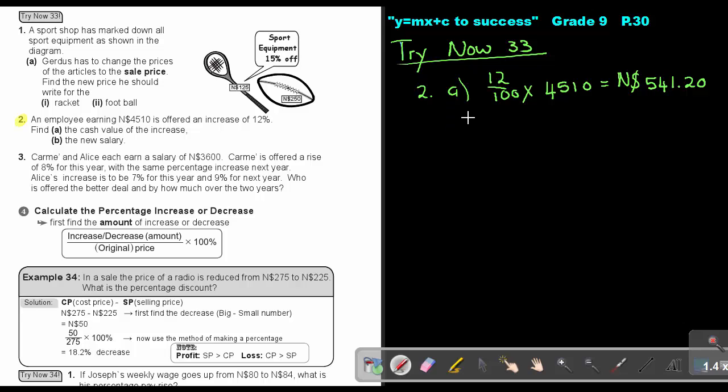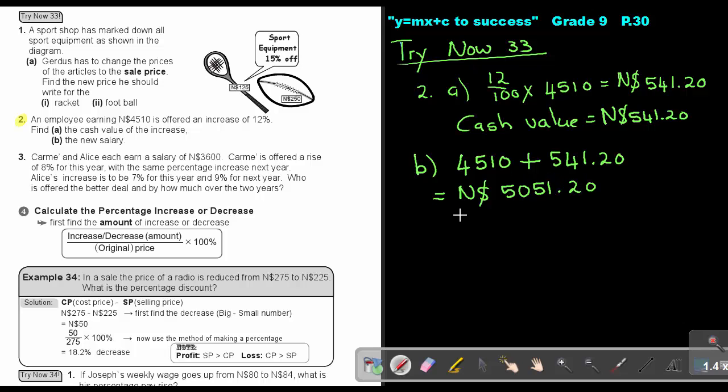And then in number B, I can just write into a sentence by saying cash value, and then just that one. And then number B, the new salary. So basically, I just do the final step. I'm just taking the original amount, 4510, and I add that new one, 541.20, and I'm going to get an answer of 5051.20. So the new salary will be 5051.20. So it's exactly the same, it's just put in, it's just in words, this example.